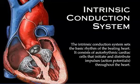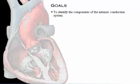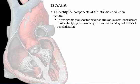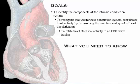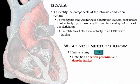The intrinsic conduction system sets the basic rhythm of the beating heart. This system consists of auto rhythmic cardiac cells that initiate and distribute impulses throughout the heart. Your goals for learning are to identify the components of the intrinsic conduction system, to recognize that it coordinates heart activity by determining the direction and speed of heart depolarization, and to correlate heart electrical activity with an ECG wave tracing. Prerequisites include heart anatomy and the definitions of action potential and depolarization.